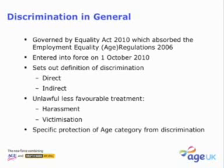There are other heads of less favorable treatment which amount to discrimination, such as harassment. Put simply, if a person is treated in a way that deprives them of their dignity — such as being subjected to abuse in the workplace based on their age — that itself is harassment. Victimization occurs when a person is subjected to less favorable treatment purely because they have raised a grievance against an employer, or supported someone who has raised a grievance, and that itself is discrimination.